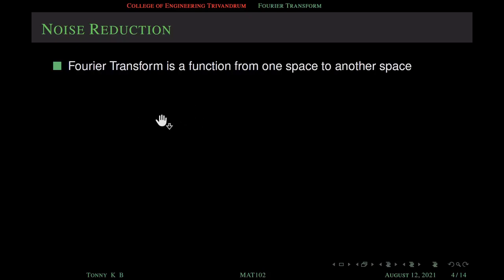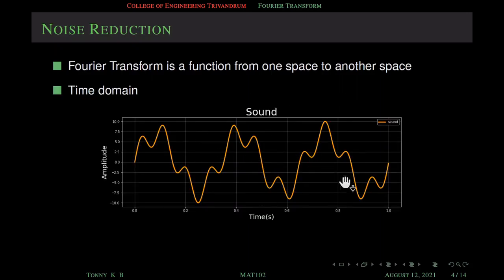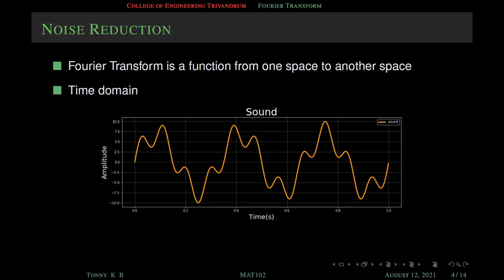Fourier transform is a transformation or a function from one space to another space. For example, we consider two spaces: one is in the time domain and the other is the frequency domain. Consider a sound signal — here time is on the horizontal axis and amplitude of the sound signal is on the vertical axis. This is the representation of sound in the time domain, and a time domain graph can show how a signal changes with respect to time.